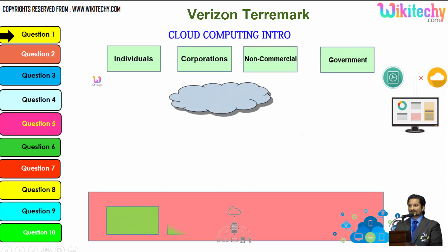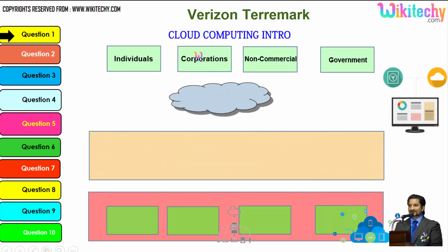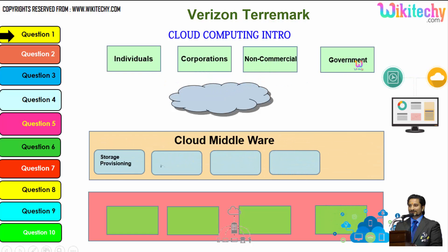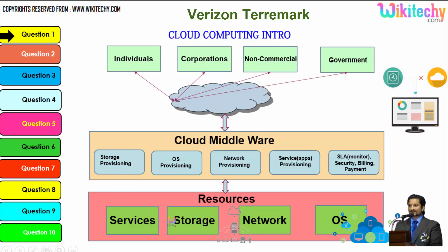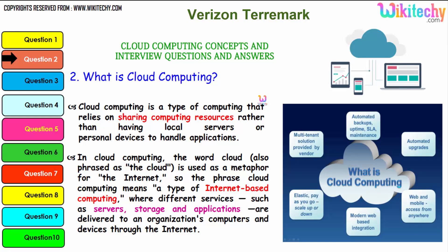There are different types of users: individuals, corporations, non-commercial people, and government. From any of these users, they are able to access services, storage, networks, or operating systems via the cloud middleware bars. These are specialized software provided by the cloud service provider to allow end users to access resources. This is how the cloud computing architecture works.